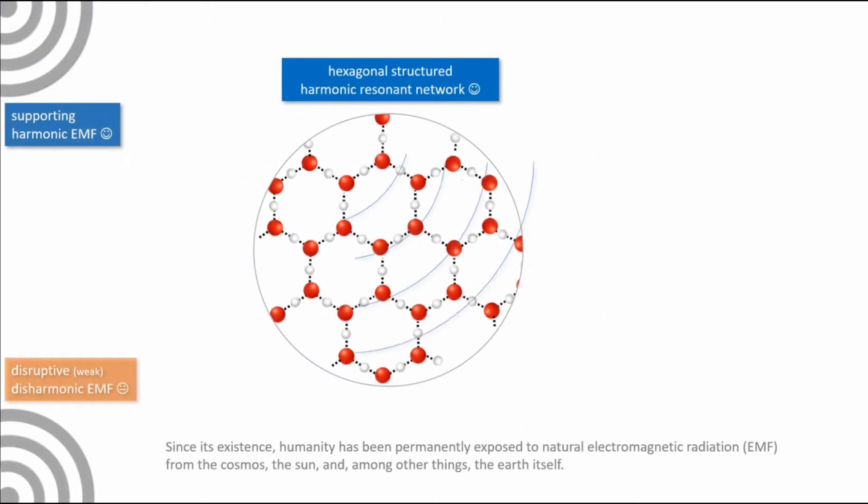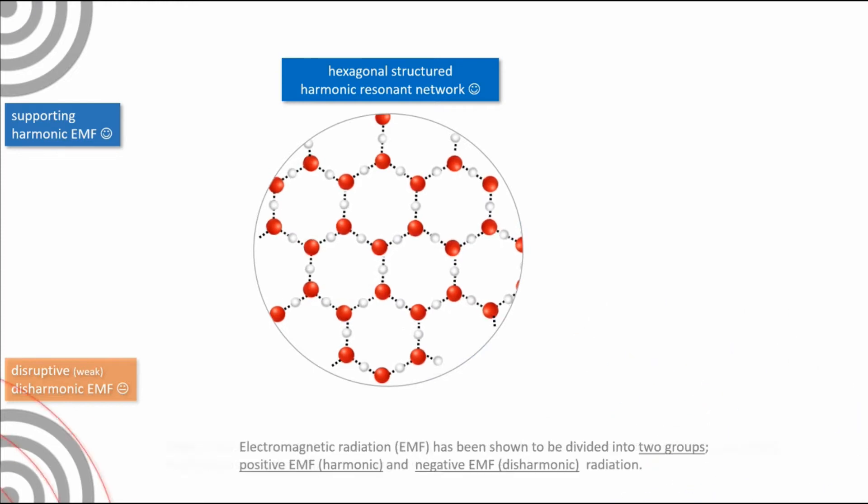Since its existence, humanity has been permanently exposed to natural electromagnetic radiation from the cosmos, the sun and the moon, and the earth itself.